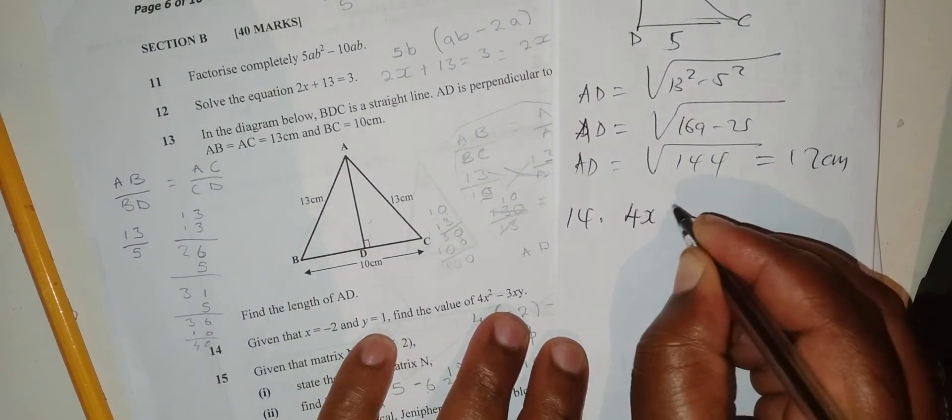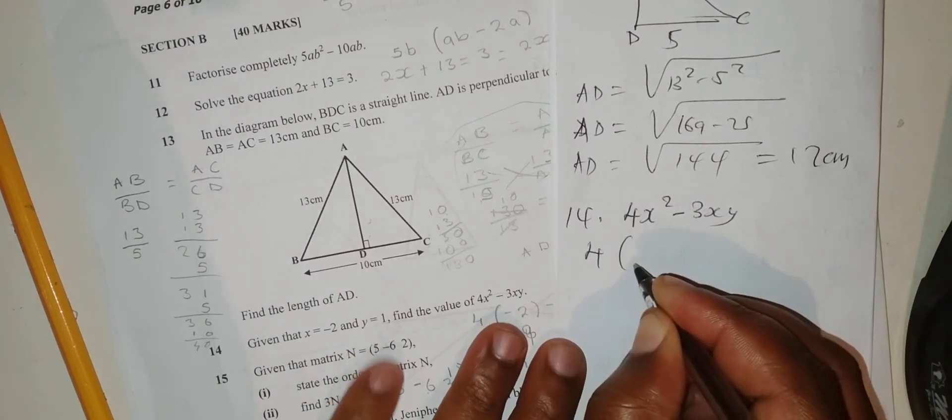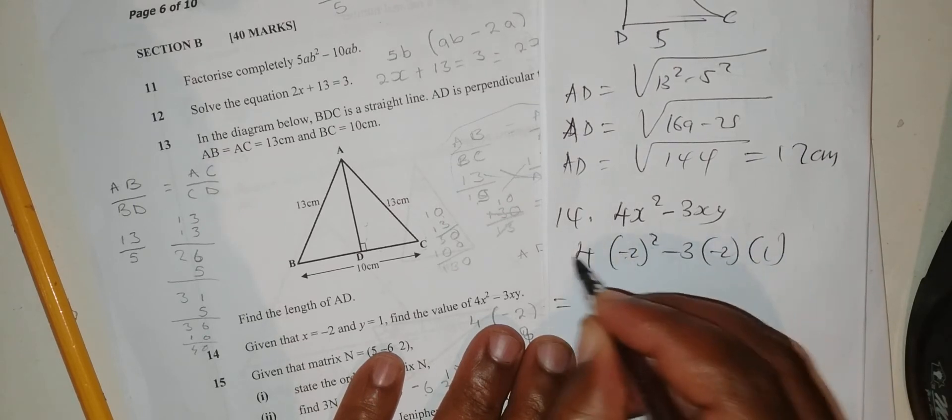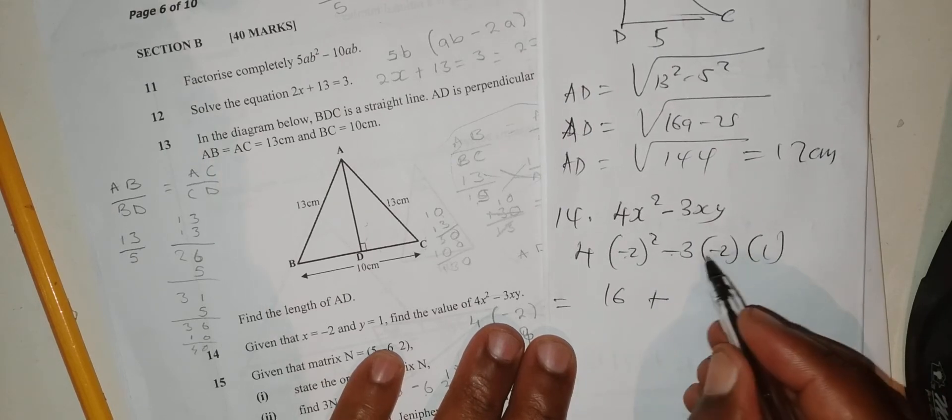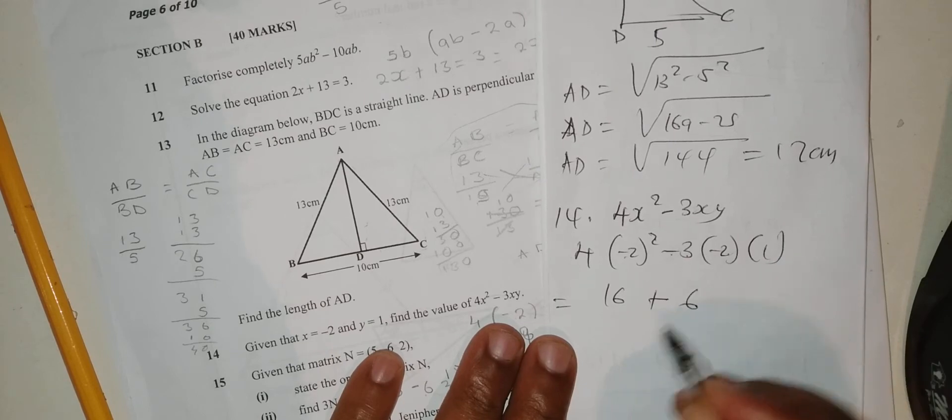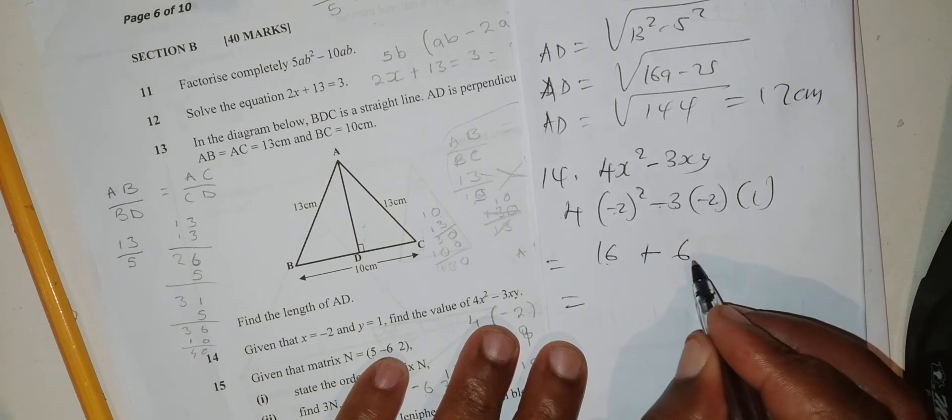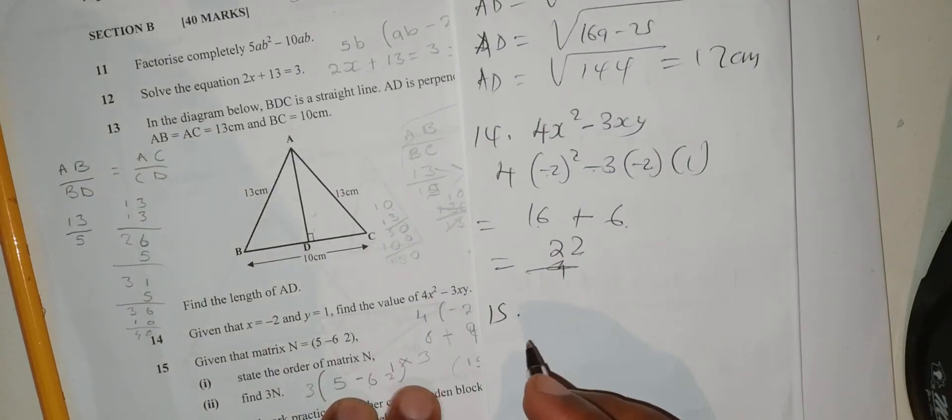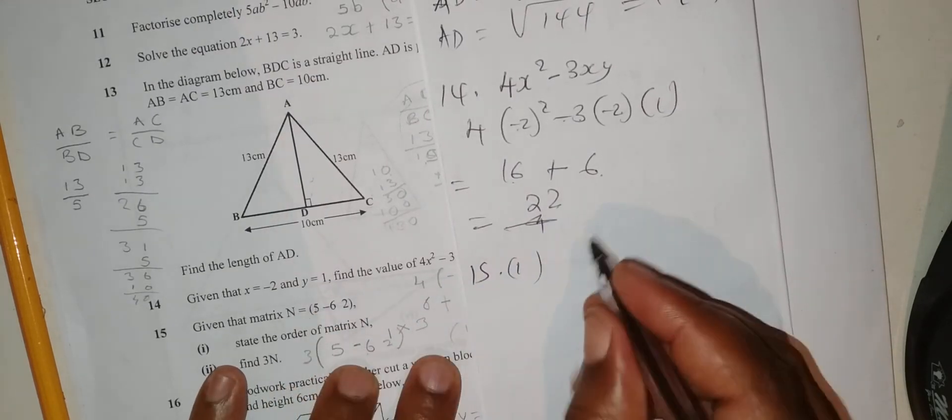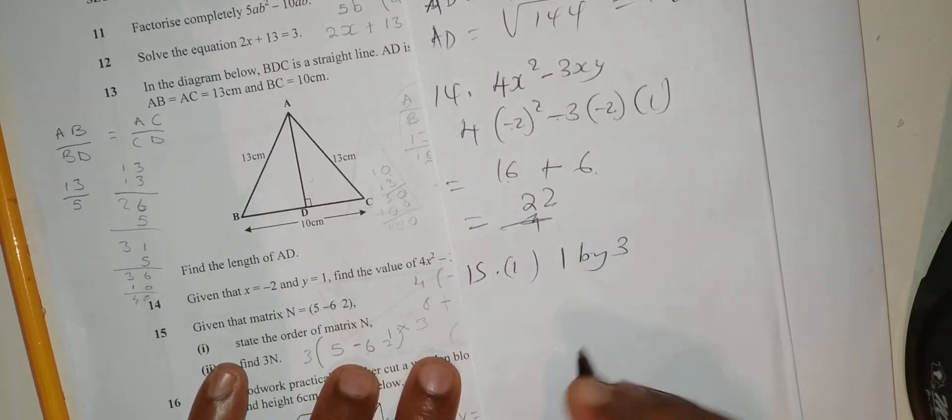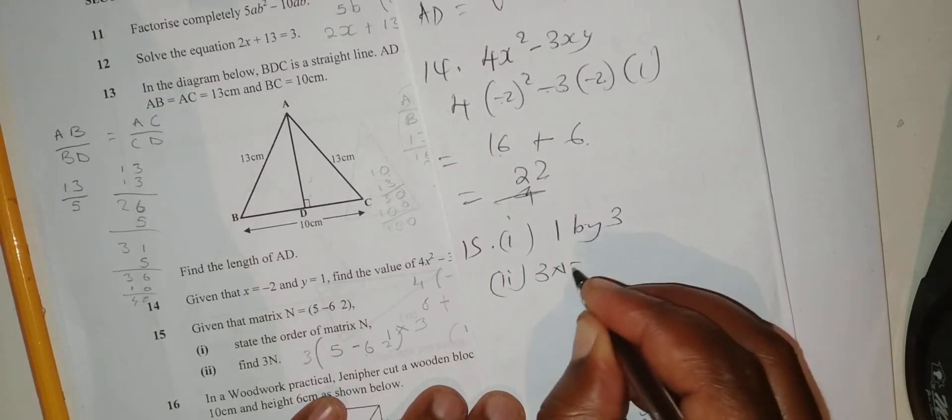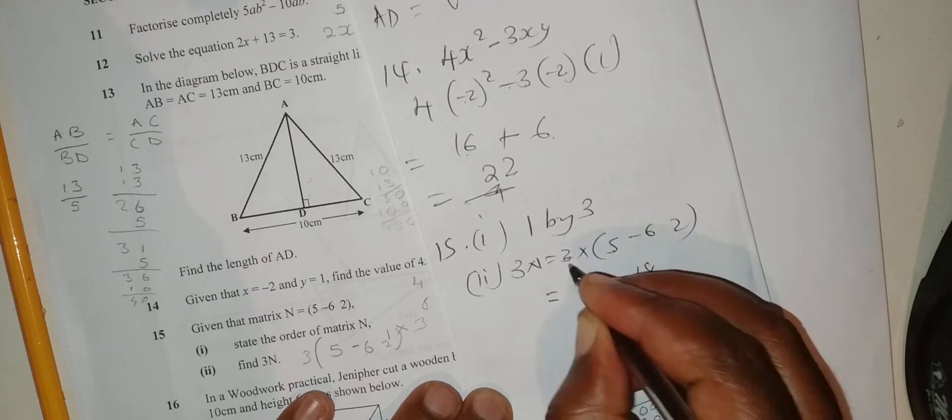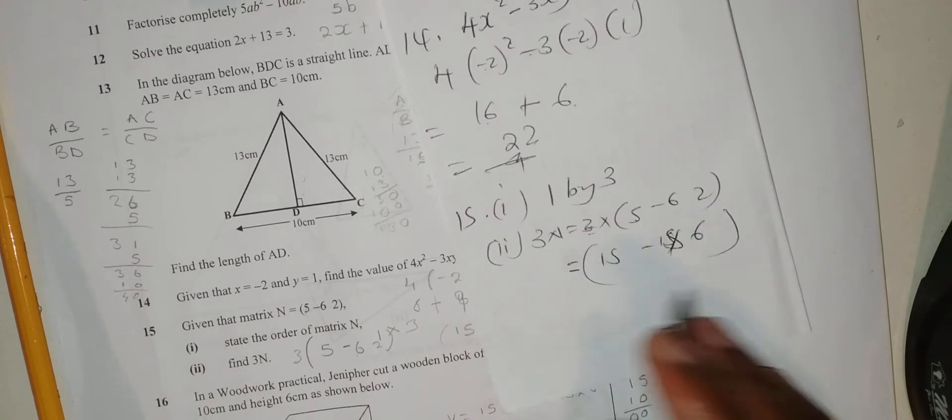Question 15: We have N equals this matrix. State the order. I have 1 row by how many columns? 1, 2, 3. So it's 1 by 3. Question 16: 3N means 3 times N, which is the matrix 5, negative 6, 2. This by that is 15, this by that is negative 18, 3 by 2 is 6. This is your answer.